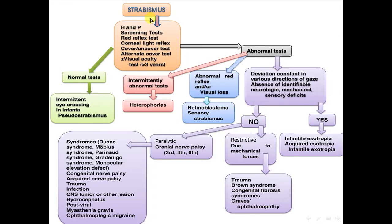How do we approach a baby with strabismus? After performing history and physical examination, screening tests include: red reflex test, corneal light reflex, cover-uncover test, alternate cover test, with or without visual acuity in children above the age of three years.